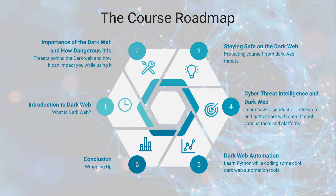Course roadmap: Section 1 covers what is the dark web — basically an introduction about what is the dark web, its history, how to access it, and how to install Tor. Section 2 is the importance of the dark web and how dangerous it is — everything related to the threats behind the dark web and how it can impact you while using it. The third section is staying safe on the dark web, protecting yourself from dark web threats.